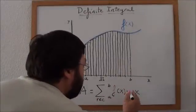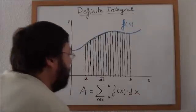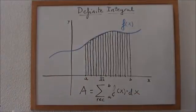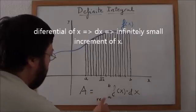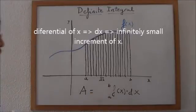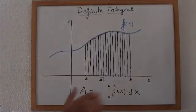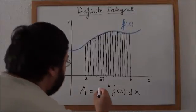When increment of x becomes infinitely small we call that differential of x. And then we replace this symbol, the sum of all rectangles, by the sum of a continuous of rectangles, the sum of an infinite number of rectangles.